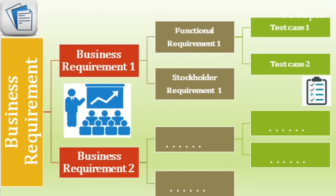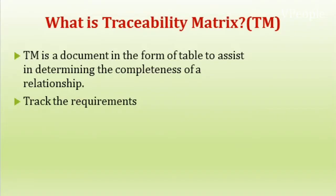You can manually do this in an Excel sheet, or you have tools currently like JAMA, GatherSpace, and Blueprint — some of the tools available in the market for requirement management. The traceability matrix is essentially a table with a matrix-like structure wherein you are mapping one relation to another, for instance, requirements to test cases.